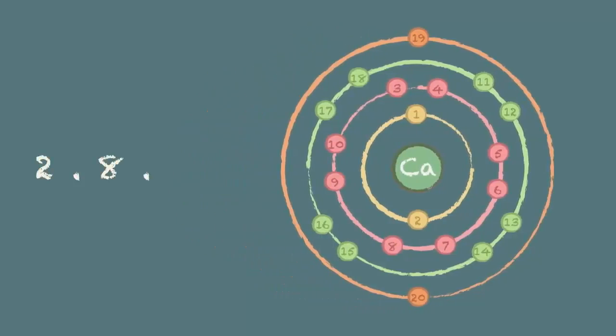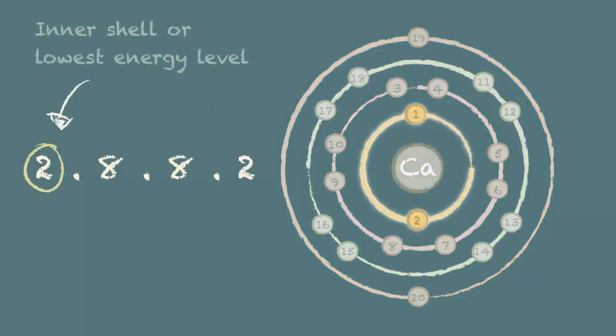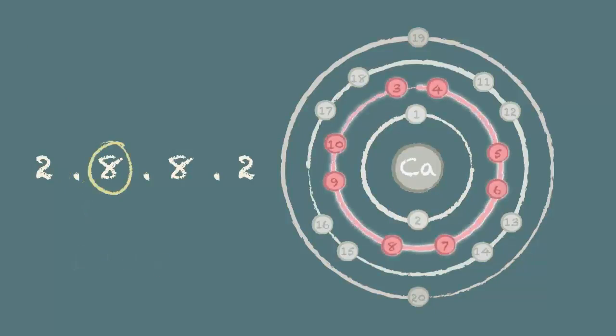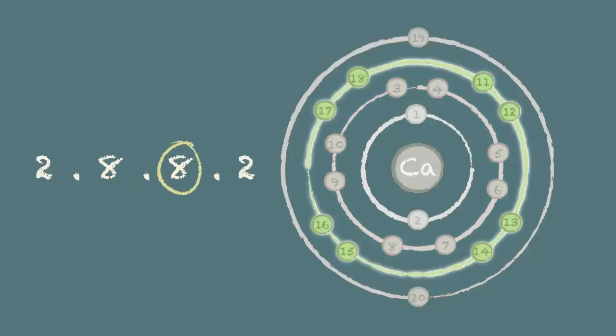Two, eight, eight, two. The first number represents the inner shell or lowest energy level. The full stop shows how the electrons are separated between the shells. The second number tells us how many electrons are in the next shell, followed by the third and fourth shells.